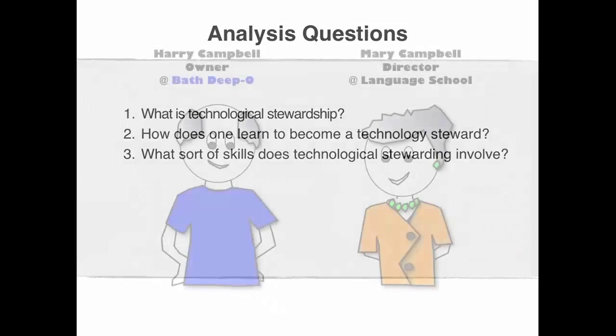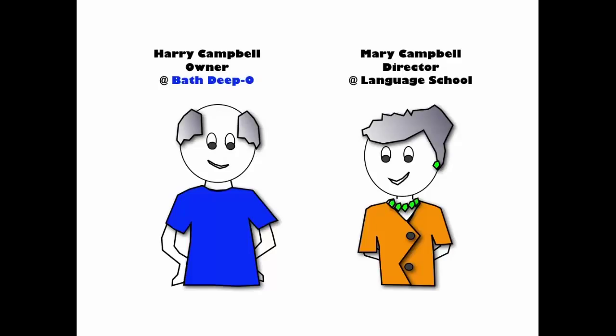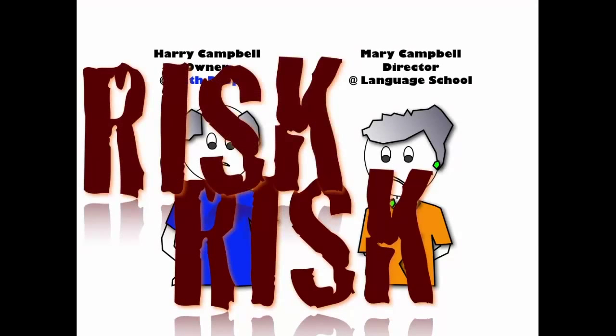If you recall, Mary, the director of the language school, and Harry, the owner of Bat Depot, both needed to learn how to exploit technologies to improve their businesses. Everyone they consulted with ended up telling them they needed to develop skills with social media, which involved learning how to work with the social aspects of learning. This ideology is far from what Mary and Harry had learned in school, and they feel very insecure. They don't know how to proceed, and they feel as though they are taking too many risks.